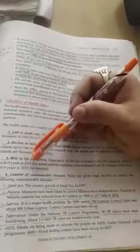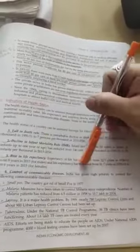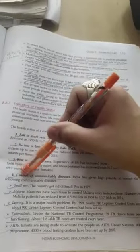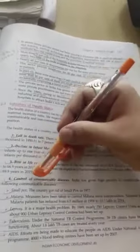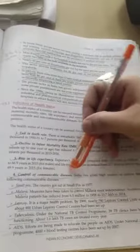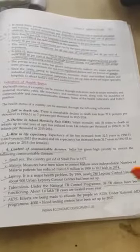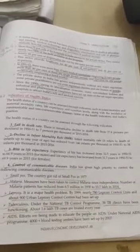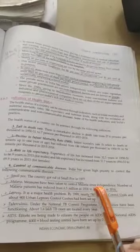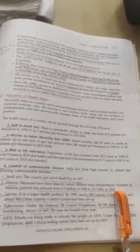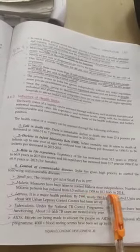Control of communicable diseases - there was no treatment before. India has also controlled smallpox in 1977, we have got rid of smallpox. Measures have to be taken to control malaria. Since independence, number of malaria patients has reduced from 6.5 million to 10.7 lakh.